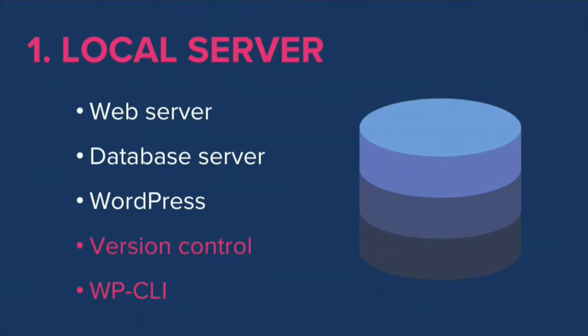Starting off with the local server. I've split this into two groups: required items and recommended items. The required items are a web server to serve WordPress files, a database server — usually MySQL — to host the WordPress database, and the WordPress files on that server. My two recommendations are version control such as SVN or Git, and a tool called WP CLI which I'll get to in a moment.